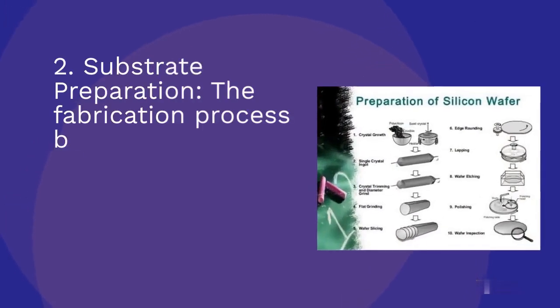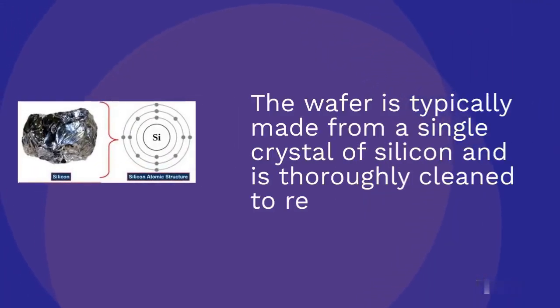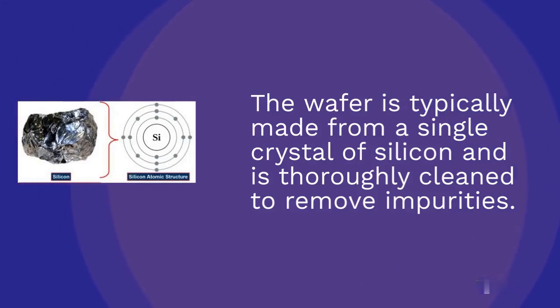Substrate preparation: The fabrication process begins with a silicon wafer, which serves as the base material for an integrated circuit. The wafer is typically made from a single crystal of silicon and is thoroughly cleaned to remove impurities.